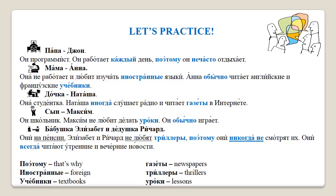Мама Анна — она не работает и любит изучать иностранные языки. Анна обычно читает английские и французские учебники. Mom Anna — she doesn't work and she loves to study foreign languages. Anna usually reads English and French textbooks. Дочка Наташа — она студентка. Наташа иногда слушает радио и читает газеты в интернете. Daughter Natasha — she is a student. Natasha sometimes listens to the radio and reads newspapers on the internet. Сын Максим — он школьник. Максим не любит делать уроки. Он обычно играет. Son Maxim — he is a schoolboy. Maxim doesn't like to do homework. He usually plays.